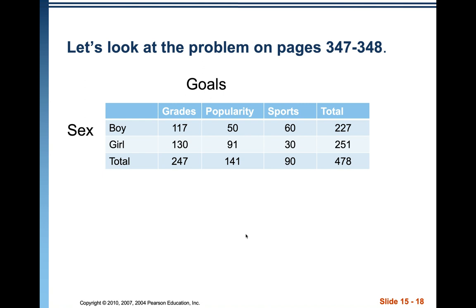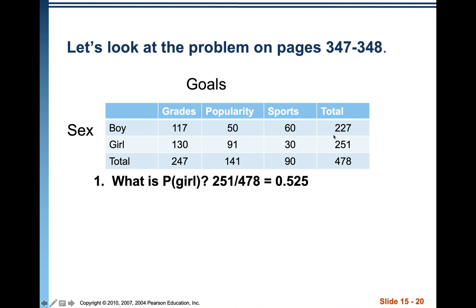Let's look at the problem on pages 347–348 — gender and goals using a contingency table. The probability that a randomly selected student is a girl: 251 divided by 478 = 0.525. To get full credit, show what you divided — show both the original fraction and the decimal equivalent.